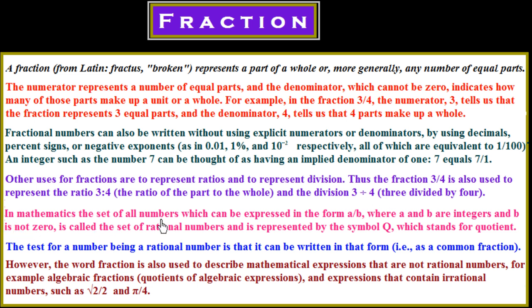In mathematics, the set of all numbers which can be expressed in the form A over B, where B is not zero, is called the set of rational numbers, represented by the symbol Q. However, the word fraction is also used to describe mathematical expressions that are not rational numbers — for example, algebraic fractions and expressions containing irrational numbers such as root 2 over 2 and pi over 4.